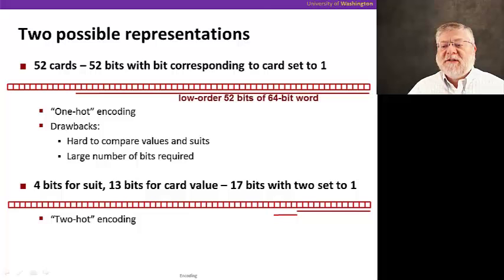Another possibility is to do a two-hot encoding, where we might use four bits to represent the suit, and another 13 bits to represent the 13 possible values of the card. So now two bits would be set to one. The first bit in the suit might be set to indicate the suit clubs, and then the first bit in the value might be set to indicate an ace.